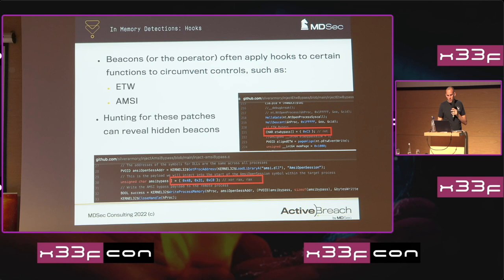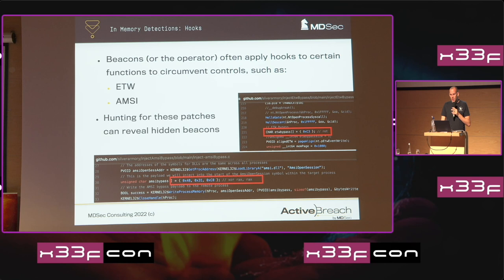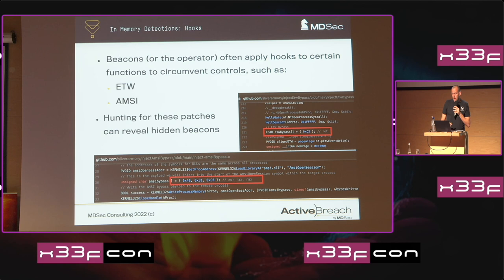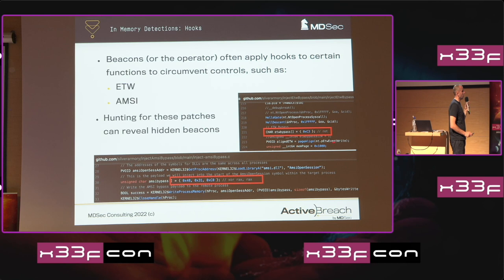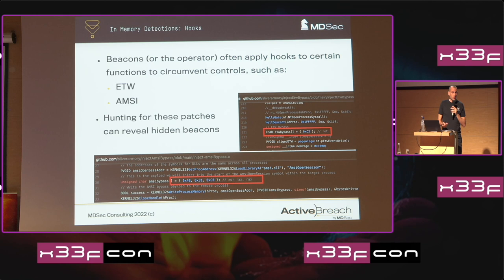There are other in-memory IOCs that can be left dangling that threat hunters can use to build detections. These might be deployed by the operator or the beacon — some good examples are memory hooks, things applied to ETW or AMSI to disable telemetry or evade scanning from antivirus engines. Hunting for these can give us a really high signal that something suspicious is going on. For example, patching ETW just finds the address of EtwEventWrite and patches it with a RET, and there's an AMSI scan buffer bypass. If we can hunt for these patches in processes, we know something suspicious is happening.